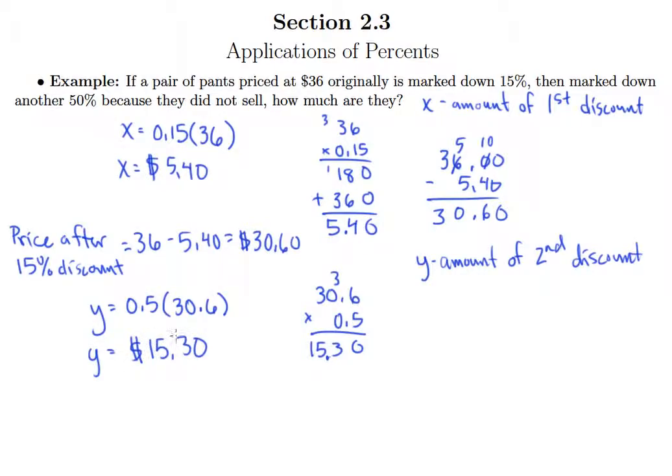Now it turns out that this is the final price that it sells for, because when you take 50%, the amount of the discount is going to be the same as the sale price. But if this was anything other than 50%, what we would need to do to finish the problem would be to say the price after the 50% discount, which is going to be the answer to our question, is the difference between 30.60 and 15.30, but that also happens to be $15.30.